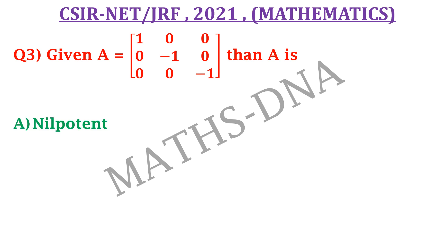The options are: A) nilpotent, B) involutory, C) idempotent, and D) none.